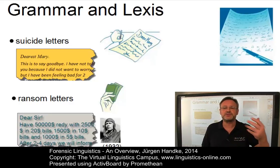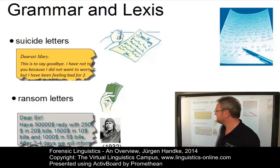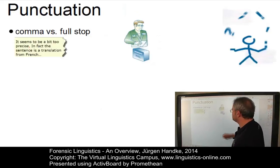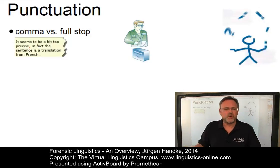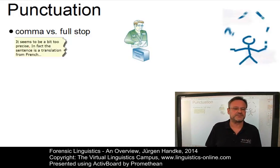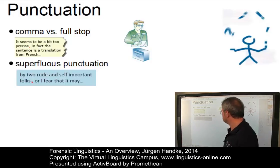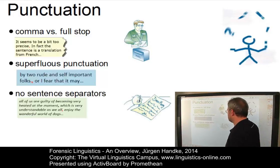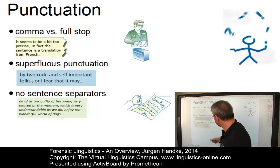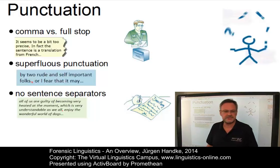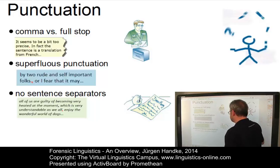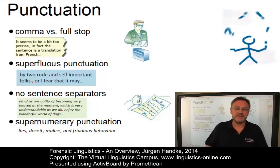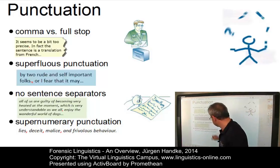Not only grammar and vocabulary, as in these two cases, but also peculiarities of punctuation can be important identifiers. Many forensic texts, for example, use commas and not full stops in particular cases — so two sentences are not kept apart by a full stop. Or take the case of superfluous punctuation, where sometimes a full stop and a comma are used in succession. Or we can observe the failure to use any punctuation between two discrete sentences. And in forensic texts you also find what is referred to as supernumerary punctuation, where lists contain commas between all items.